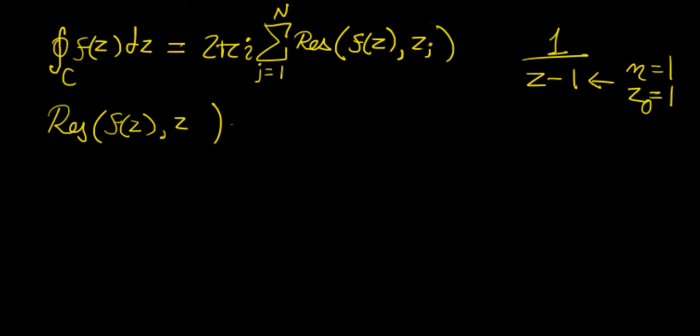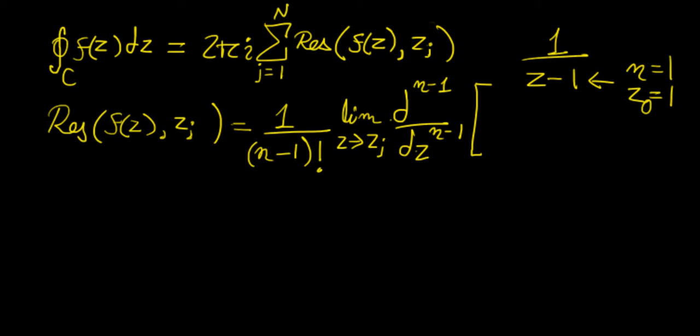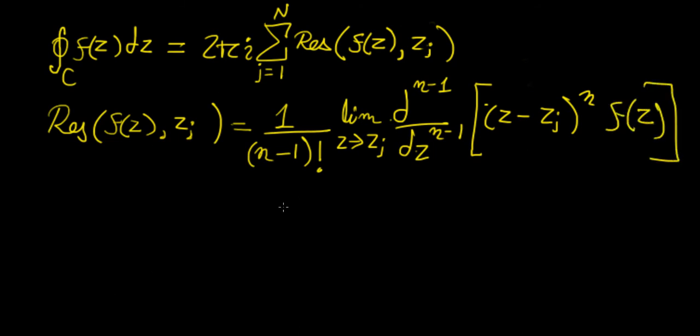We're going to have 1 over (n-1)! times the limit as z approaches that pole z_j times the (n-1)th derivative with respect to z of this function. So this is going to be (z - z_j) to the power of n, which is the order of the pole, times the function f(z). And this is what a residue is defined as.